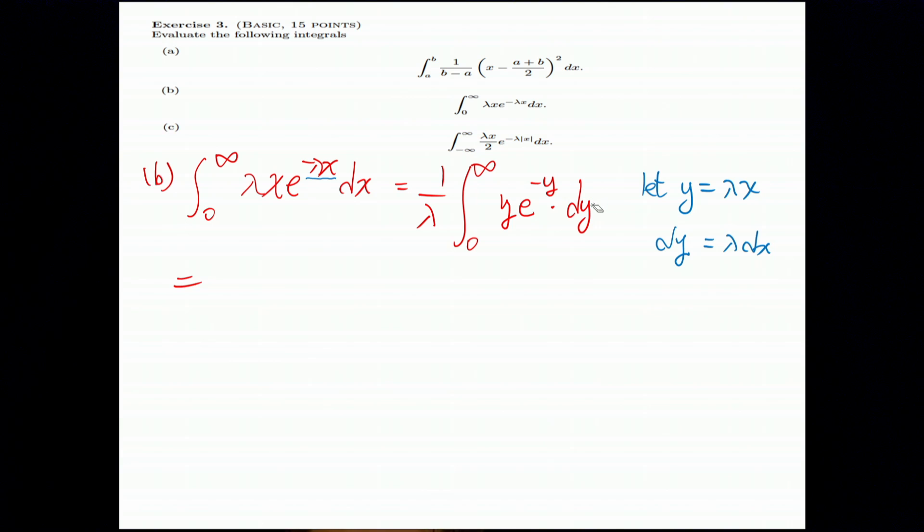There's no lambda here since it canceled out. So, I have 1 over lambda in the front. So, next, I still have 1 over lambda. And we can calculate this integration right now. It is the minus Y times E to the minus Y. It's integration by parts from 0 to infinity plus the integration E to the minus Y dy.